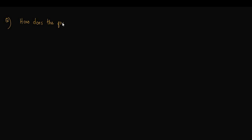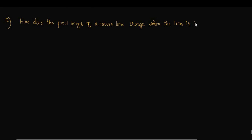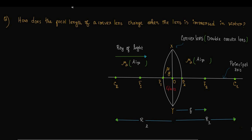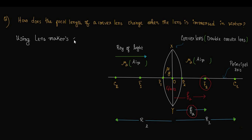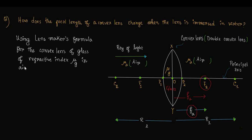How does the focal length of a convex lens change when the lens is immersed in water? This is a diagram of a convex lens. Fa is the focal length, which is the distance of the second principal focus F2. Using the lens maker's formula for a convex lens of glass placed in air: